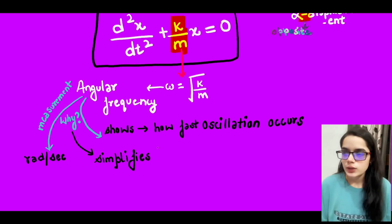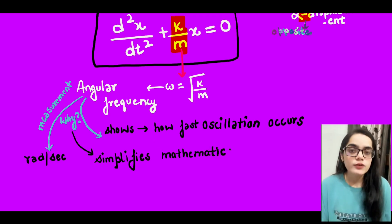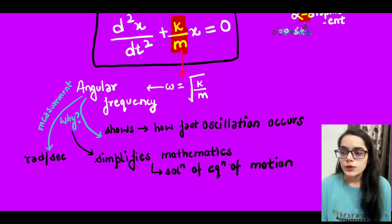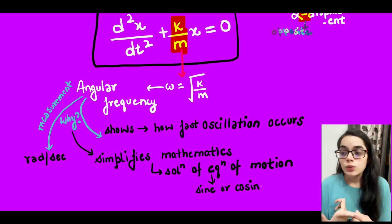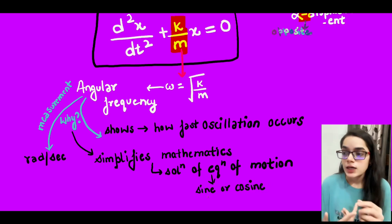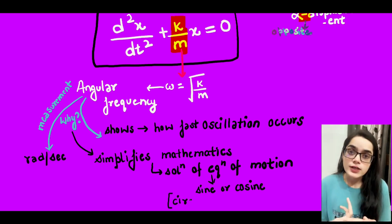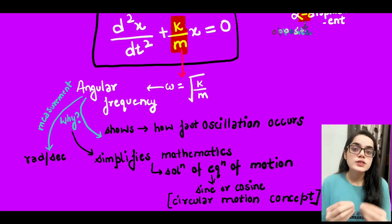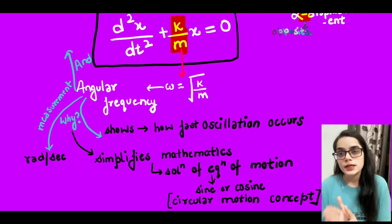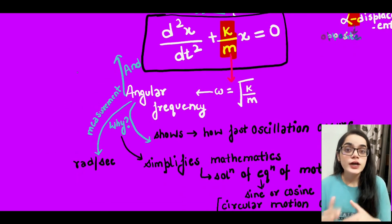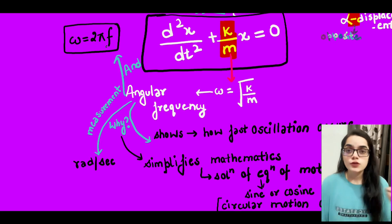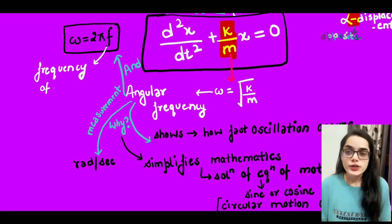Why do we use angular frequency instead of √(k/m) in the equation? First, angular frequency shows how fast oscillation occurs. Second, it simplifies the mathematical solution of the equation of motion. Since the solution of a second-order differential equation is in terms of sine and cosine, angular frequency is easy to define in sine and cosine and easy to relate to frequency.